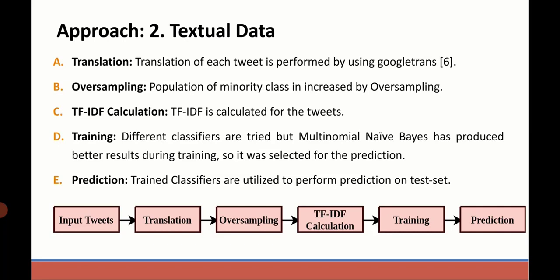Then we oversampled the minority class and made it equal to the majority class. We trained a multinomial Naive Bayes classifier on the TF-IDF vectorizer. Finally, prediction was performed.